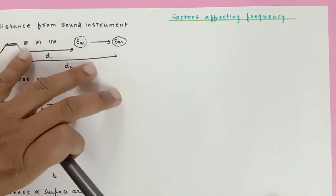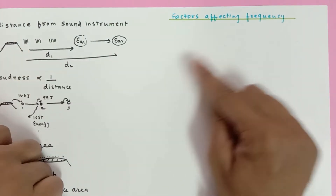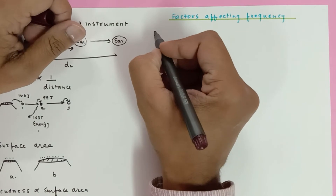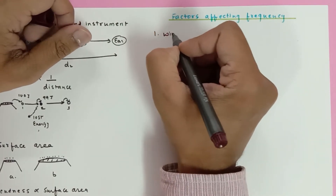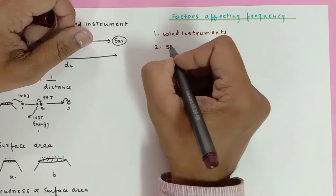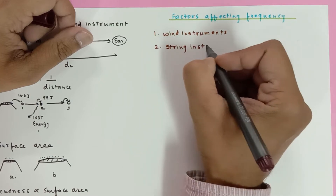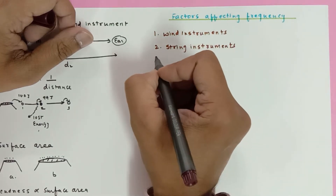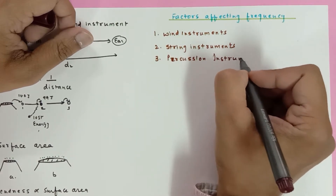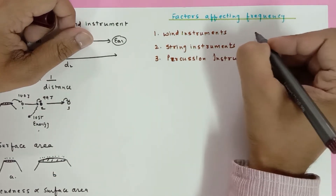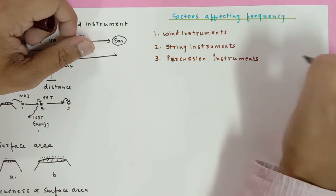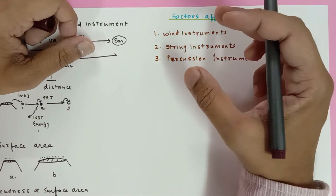Let's continue with the factors affecting the frequency of sound instruments. We discussed about loudness factors earlier, now we're going to discuss the factors affecting frequency. There are many types of sound instruments: we have wind instruments, string instruments, and percussion instruments. For flute we blow air in, for strings they vibrate, and for percussion the membrane vibrates.